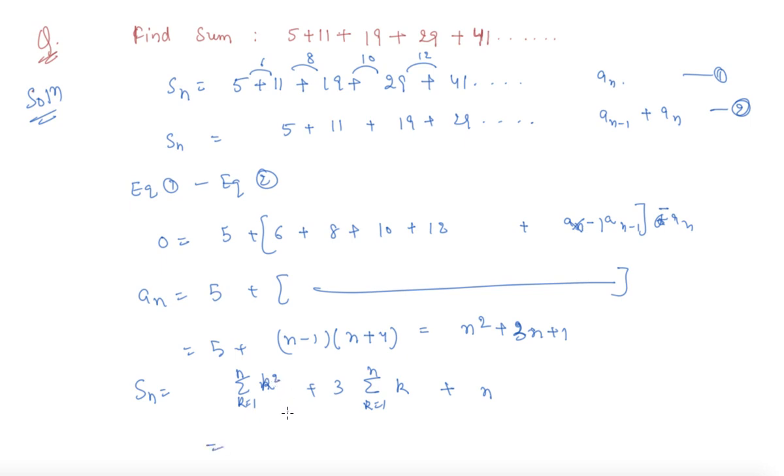So by applying the formulas for all the summations, this is the summation n square. As I have told you, the formula for these summations will be very useful plus n. So by taking LCM students, what we will be left with is n into n plus 2 into n plus 4, by taking the LCM.